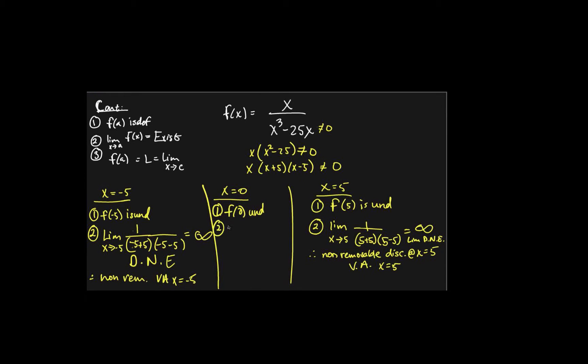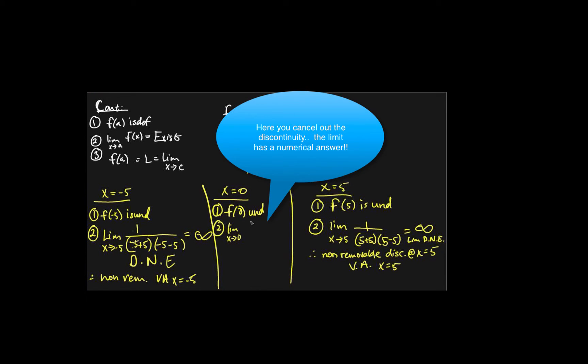Look what happens when we take the limit. You would just get zero. No? Oh, wait, hold on. It's 1 over x plus 5, so you have 5 times negative 5, which is just 1 over negative 25.